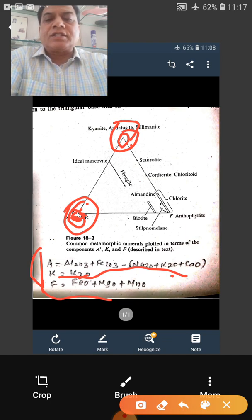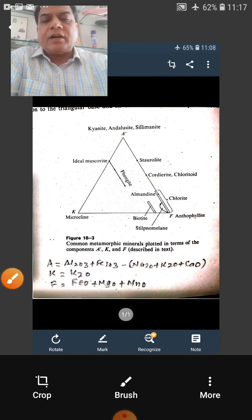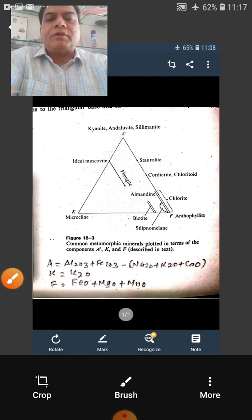But now because CaO is not considered here, this corner is for the K. This means your microcline will be plotted here.